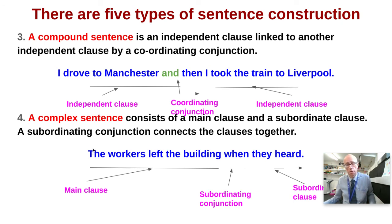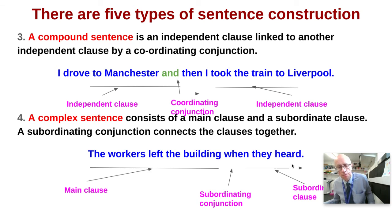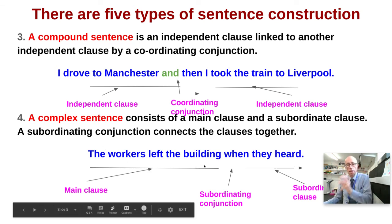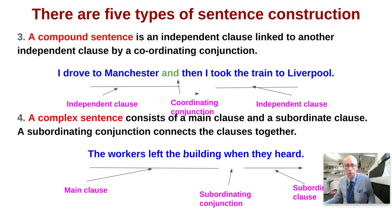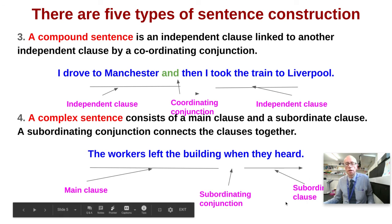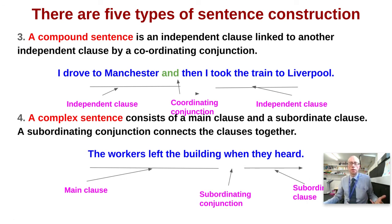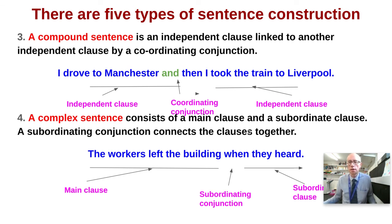We then have complex sentences, which consist of a main clause and a subordinate clause connected by a subordinating connective. Look at this sentence: 'The workers left the building when they heard.' The main clause is 'the workers left the building' — that in itself would constitute a complete simple sentence. But we've got 'when they heard' tagged on, which is a subordinate clause — it only makes sense attached to the main clause. So 'when' is functioning as the subordinating connective. More formal texts with higher register tend to use more complex sentencing.